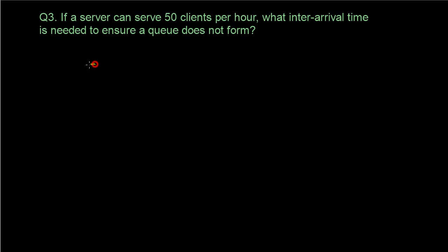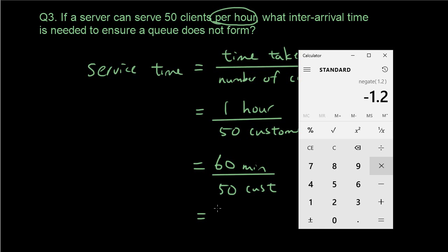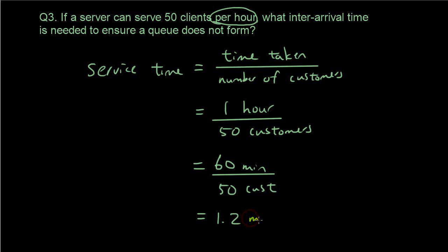The service time is calculated the same way as inter-arrival time: the time taken to serve customers divided by the number of customers. So we have one hour, which is 60 minutes, to serve 50 customers. 60 divided by 50 is 1.2 minutes per customer, which is the answer.